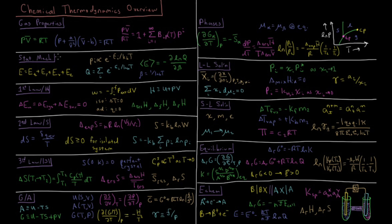We look at statistical mechanics, where the energy of a given molecular system is quantized in terms of translational, rotational, vibrational, and electronic energy levels. We look at the Boltzmann factor, which determines that the probability of a molecule being in a given quantized state is proportional to the exponential of its negative energy over Boltzmann constant times temperature. We have the partition function, which is the sum over all states of their Boltzmann factors.